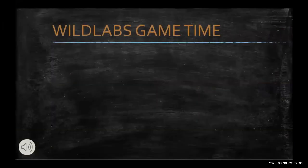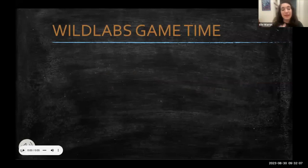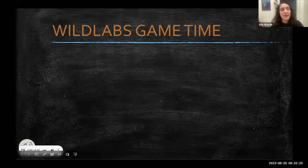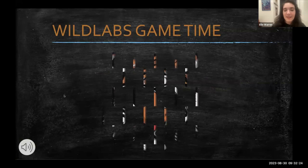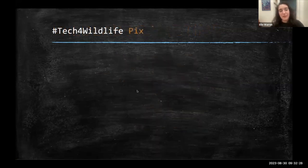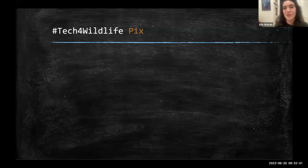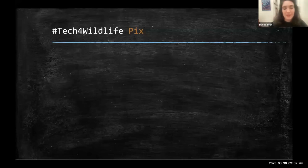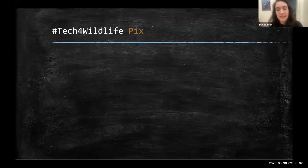We also have a new WildLabs Instagram at wildlabs.net on Instagram. Now it's game time. Speaking of our Instagram and our Tech for Wildlife photo challenge, this month's theme is going back to the pixelated photos — we're doing it to celebrate the Tech for Wildlife photo challenge. These are all photos that were honorees in our first-ever Community Choice Awards during this year's challenge. I'll be looking for guesses of either the animal or the technology involved.